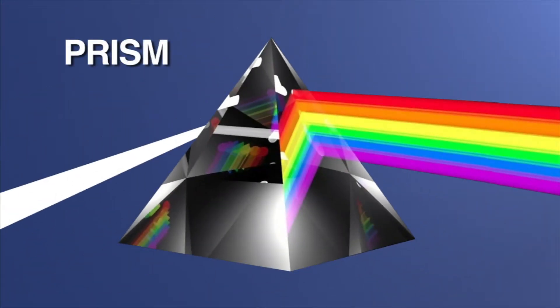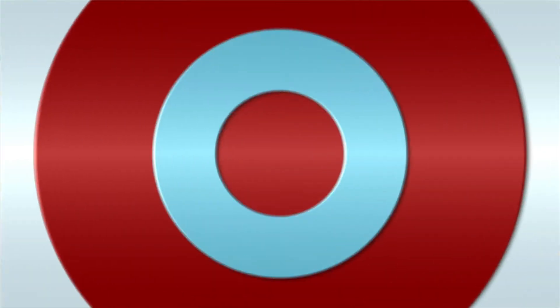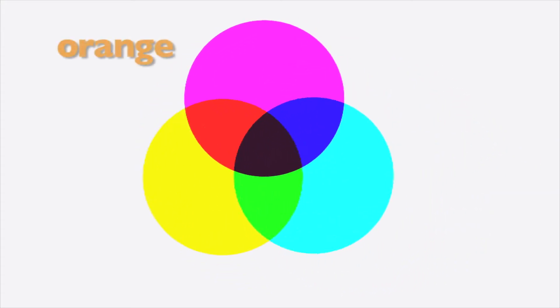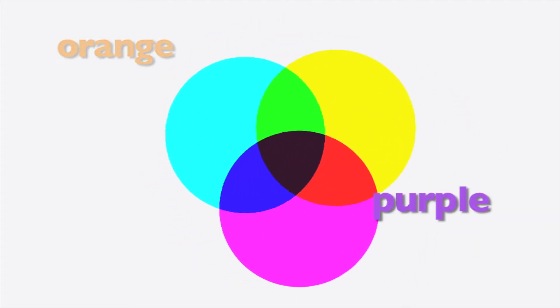When you see what we call white light, you are actually seeing all of the colors of the rainbow mixed together. A prism is a uniquely shaped object that can separate white light into individual colors. Artists use three primary color pigments, which are all opaque, to create all of the other colors. The primary colors of pigments are magenta, cyan, and yellow. Put together equal amounts of all three and you get black. By mixing varying amounts of those colors, they can create orange, purple, and just about anything else you can imagine.